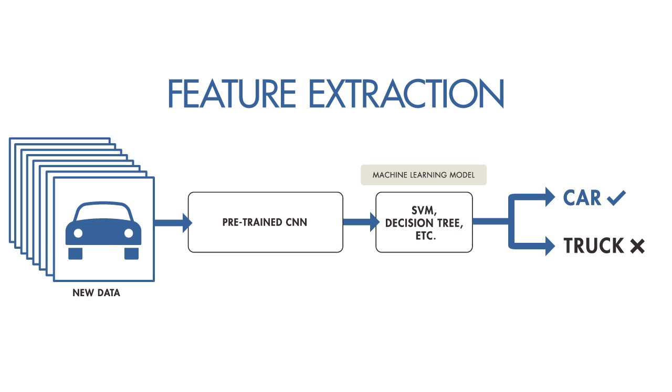With the third method, you can use a pre-trained CNN to extract features for training a machine learning model. For example, a hidden layer that has learned how to detect edges in an image is broadly relevant to images from many different domains. This method requires the least amount of data and computational resources.